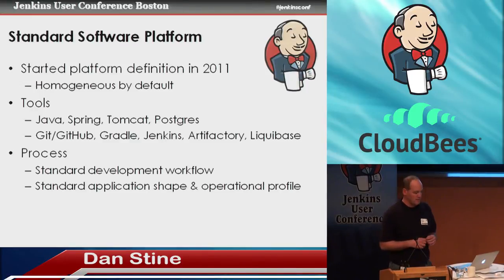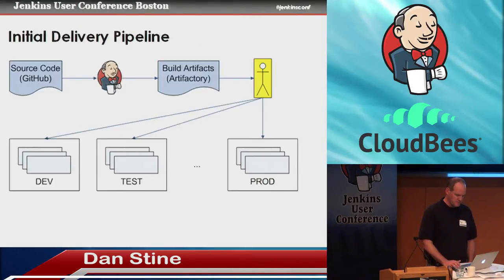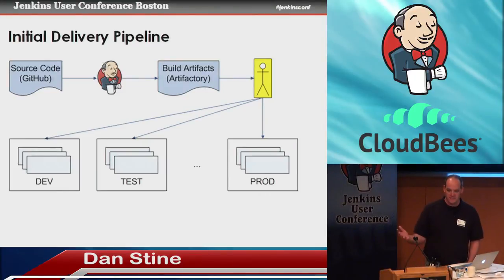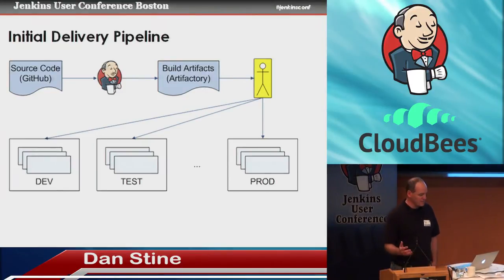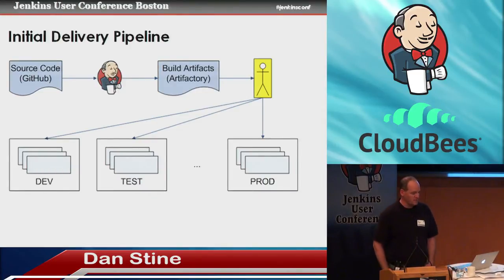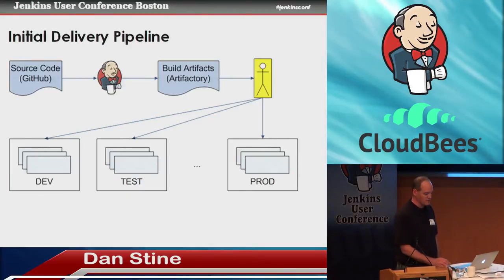Applications should have a common shape and profile — configured in a standard way, logging done in a standard way — and that helps developers and operations all through the pipeline. The initial delivery pipeline we built looked like this: we had our source code in GitHub, we had Jenkins converting that source code into binary artifacts, we published to Artifactory, and then we deployed that on a wide array of machines grouped into various environments. How did we do that? Well, we had this poor guy in IT operations doing it manually.